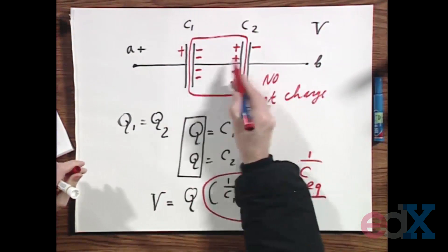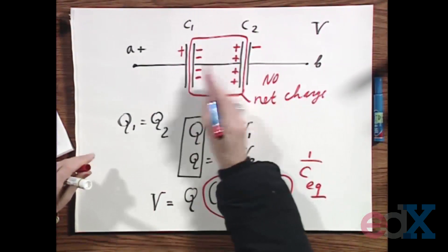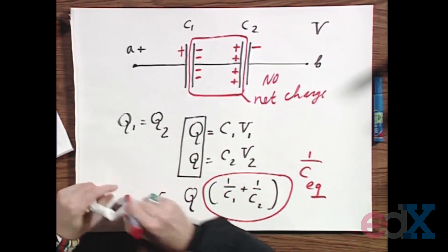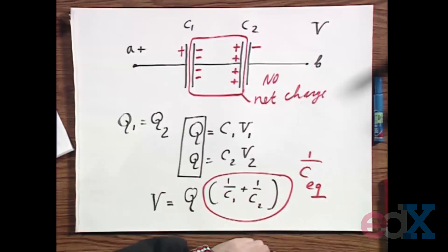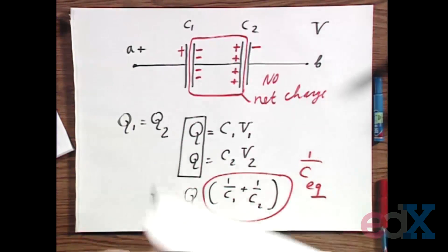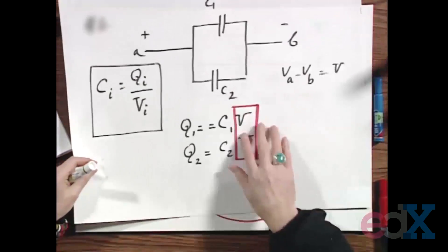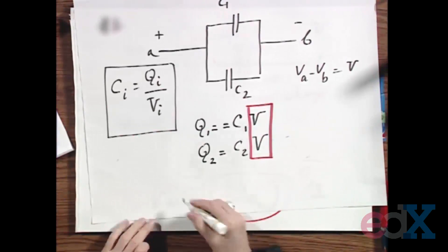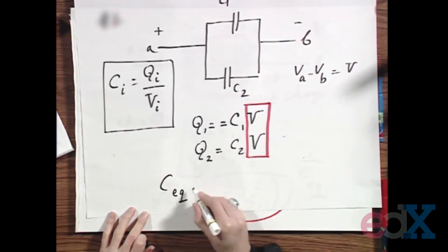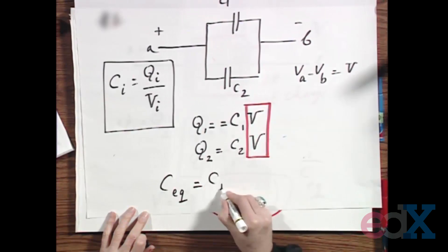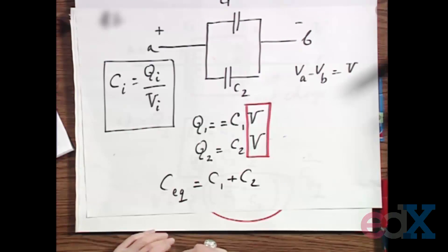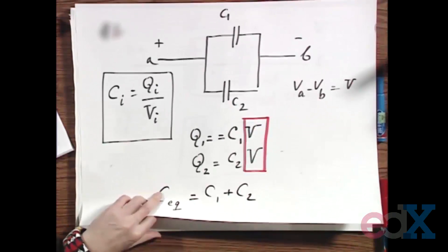The C_equivalent is, so to speak, replacing these two. If you had a parallel set of capacitors, then that C_equivalent would become C1 plus C2. I'm sure you will have no problems proving that. So let's now go to problem number one and apply some of what I just told you.